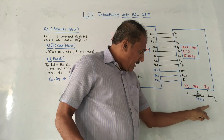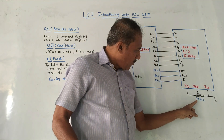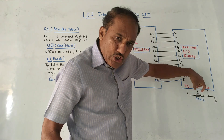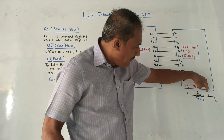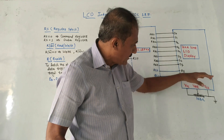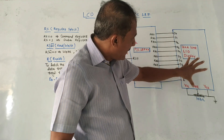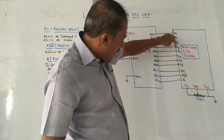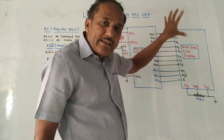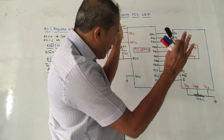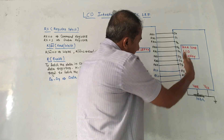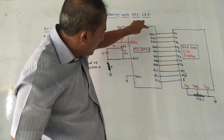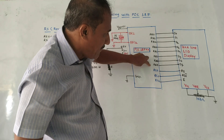Here we have shown one potentiometer of value 10 kilo ohm. By varying the position of resistance, we can adjust the contrast of this LCD display. Then D0, D1, D2 up to D7 — these are called data lines. In this diagram, these data lines are connected to Port B of the microcontroller, from RB0 to RB7.